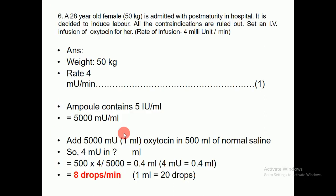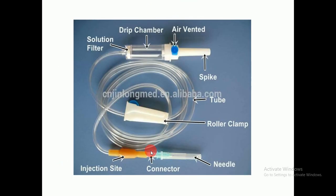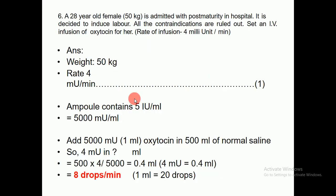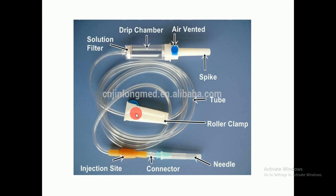Now let's look at the IV infusion set. This is called the air-vented drip chamber, this is the solution filter, this is the spike, this is the tube, this is the roller clamp, this is the needle, this is the connector, and this is the injection site. We use different types of infusion sets.